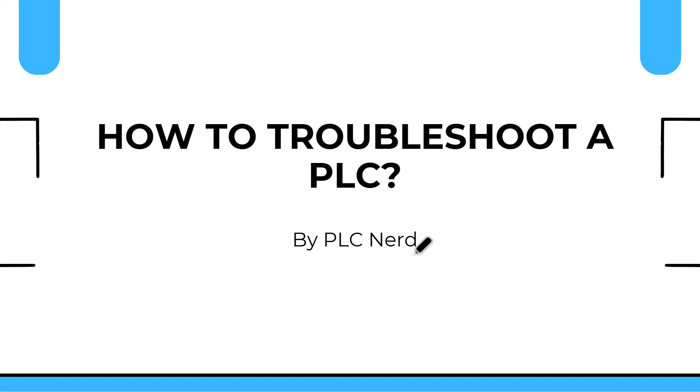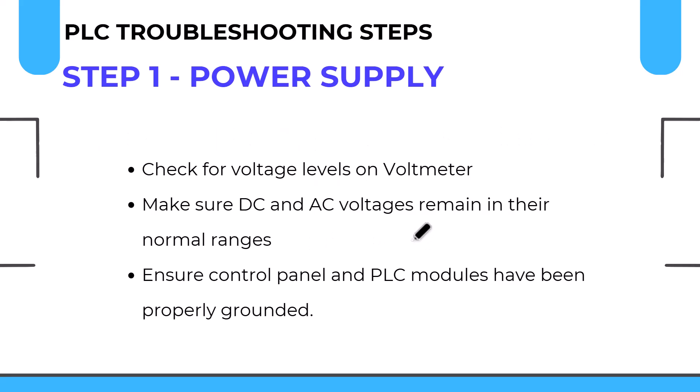Step one is to check the status of the power supply. Each PLC has a power supply module, whether integrated or separate. In our case it is the Siemens S7-300 power supply PS307. Make sure the input voltage is within the normal range, and the output voltage — in our case DC 24V — is correct. Ensure that each module of the PLC is receiving its proper power supply.